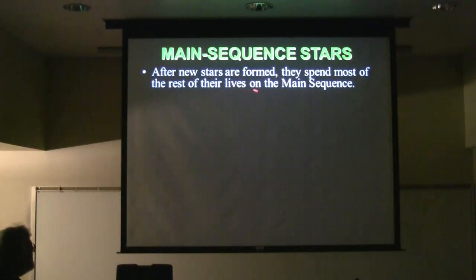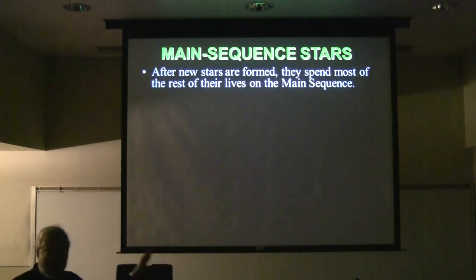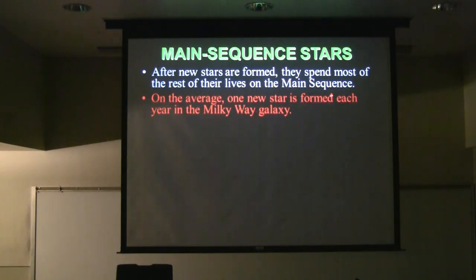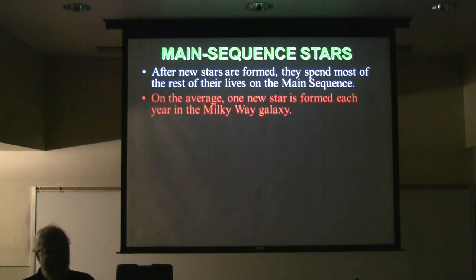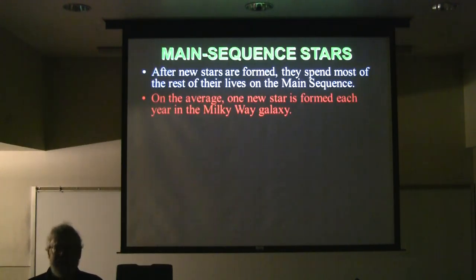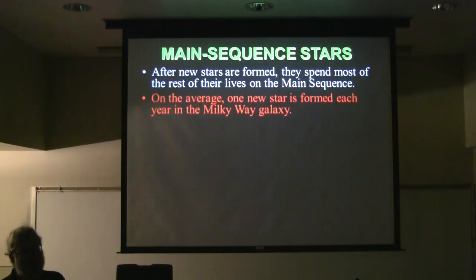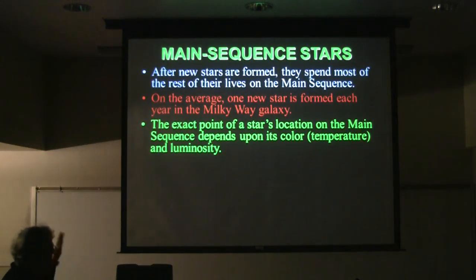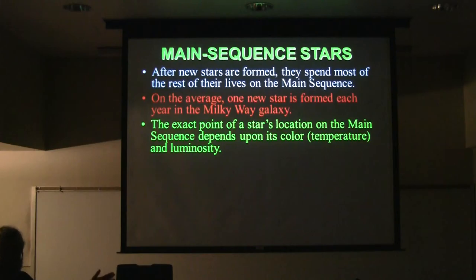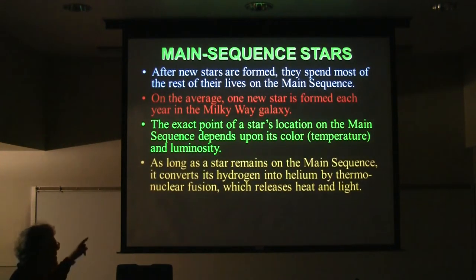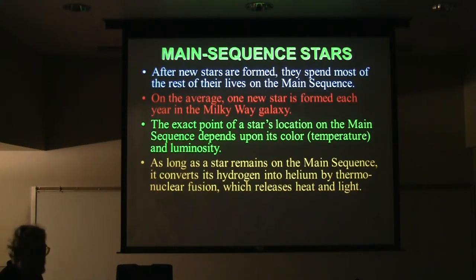After new stars are formed, they spend most of the rest of their lives on the main sequence — that band on the HR diagram from upper left to lower right. One new star is formed each year in the Milky Way galaxy — not one at a time, but there are millions of them going on at the same time, so on average we get about one star a year, or a million stars every million years. The exact point of a star's location on the main sequence depends on its color and its luminosity. As long as the star is on the main sequence, it's converting hydrogen into helium by thermonuclear fusion, which releases the heat and light.